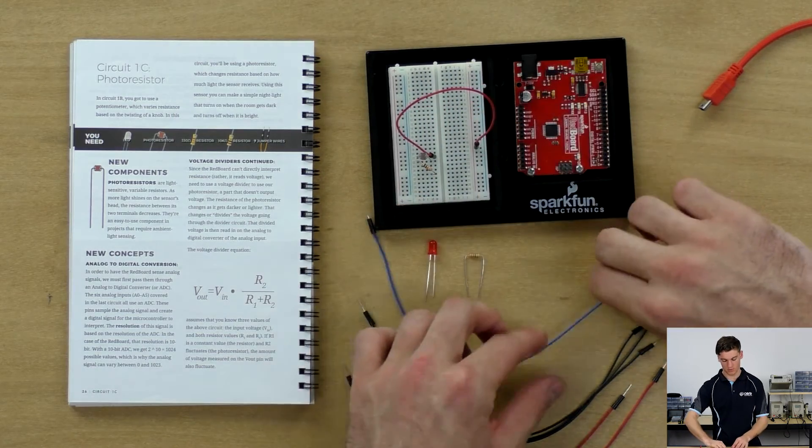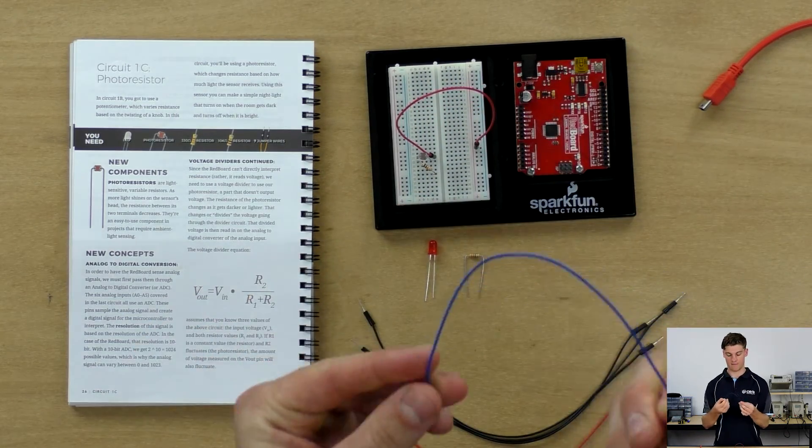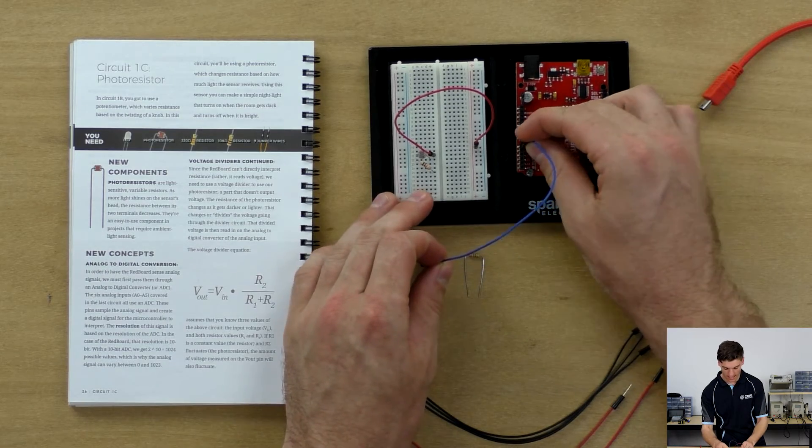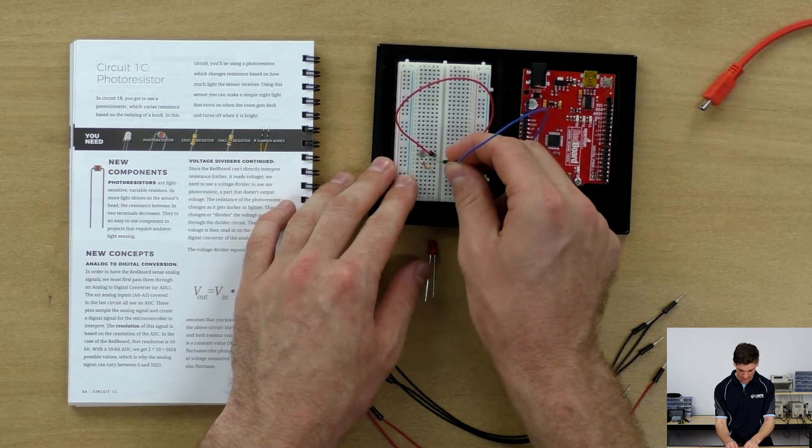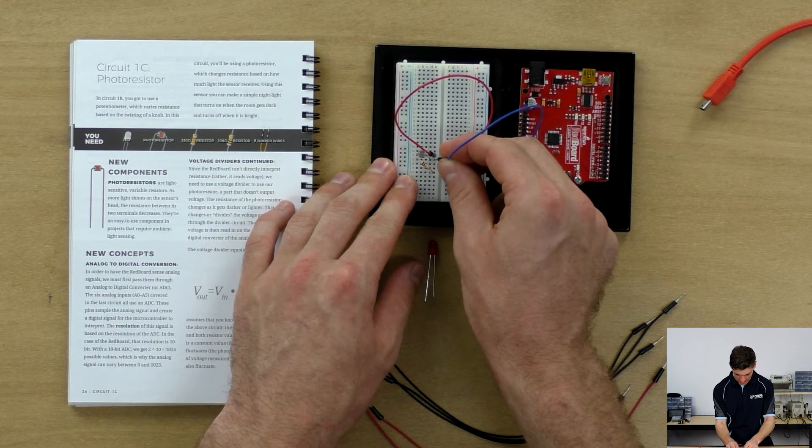We're going to connect the blue wire to A0 and to where the crossover happens which is at E22.